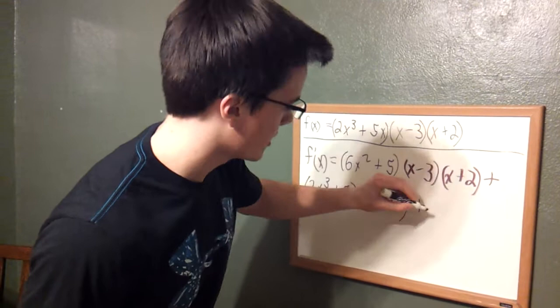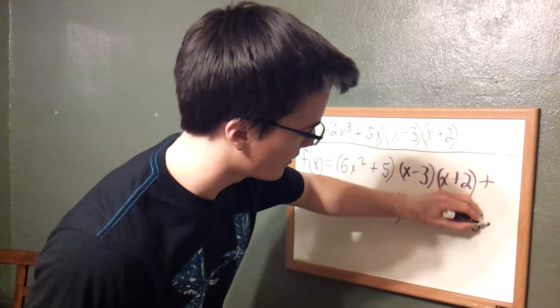So you just tag the other two terms on to it. 2x to the third plus 5x.